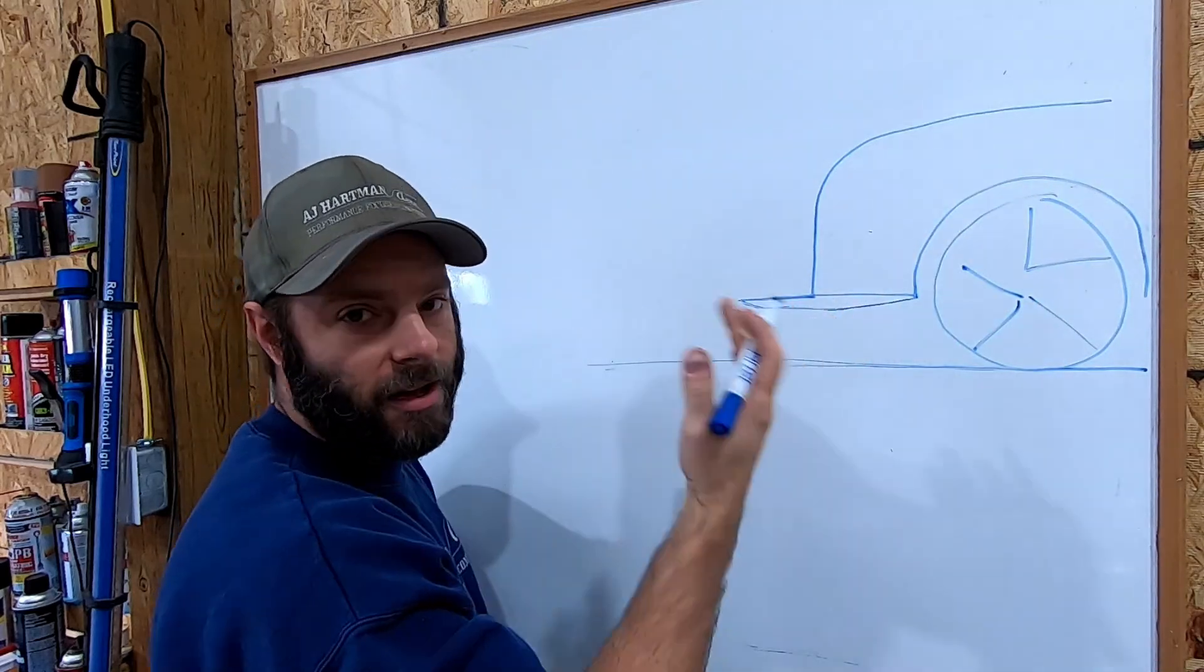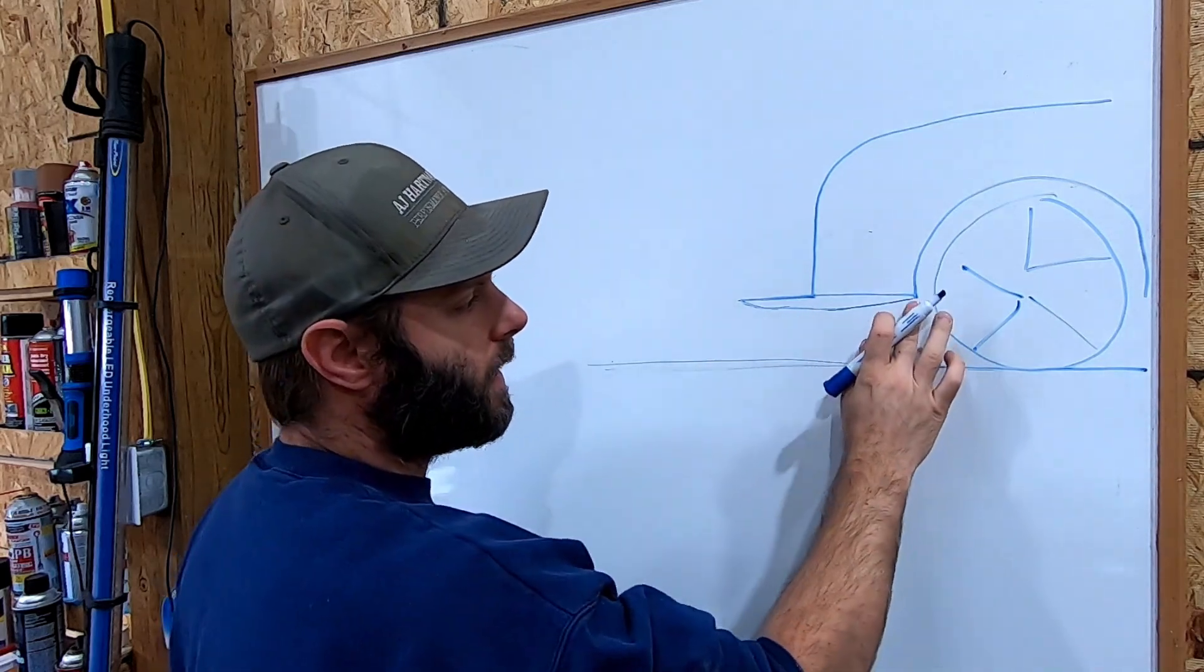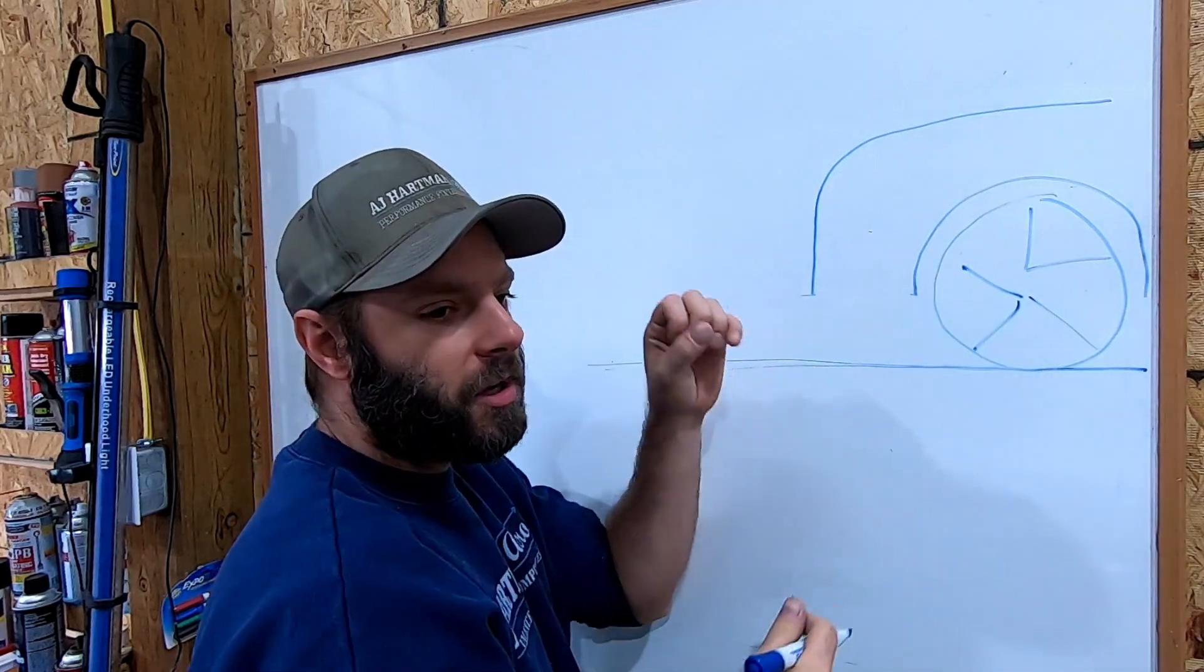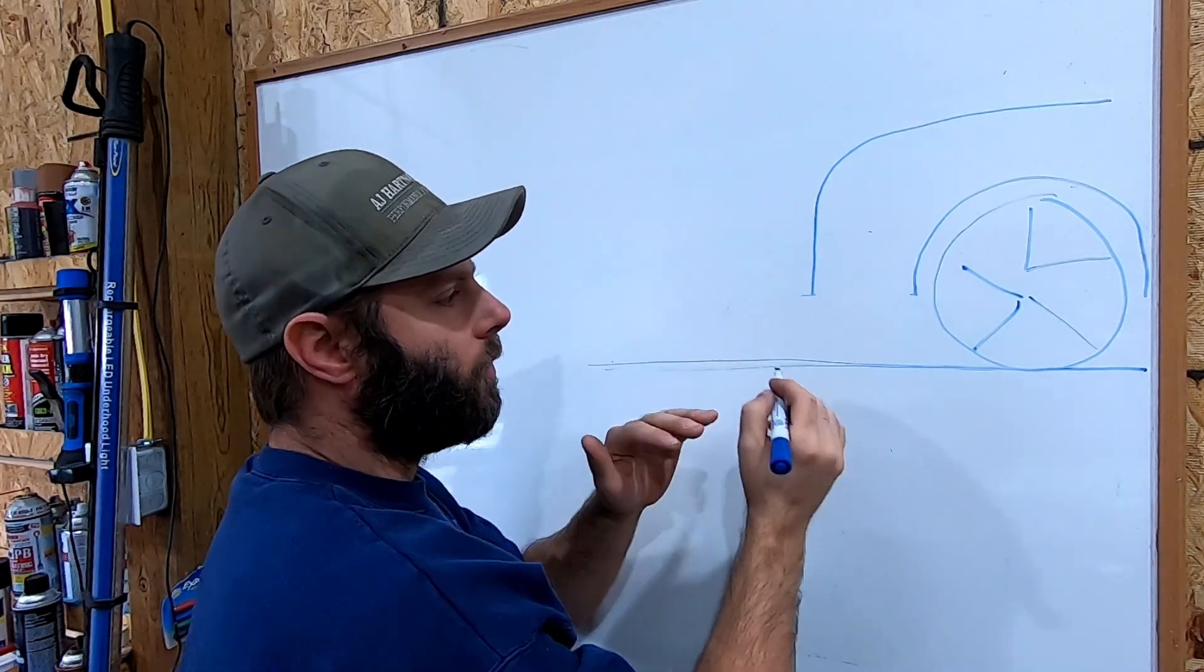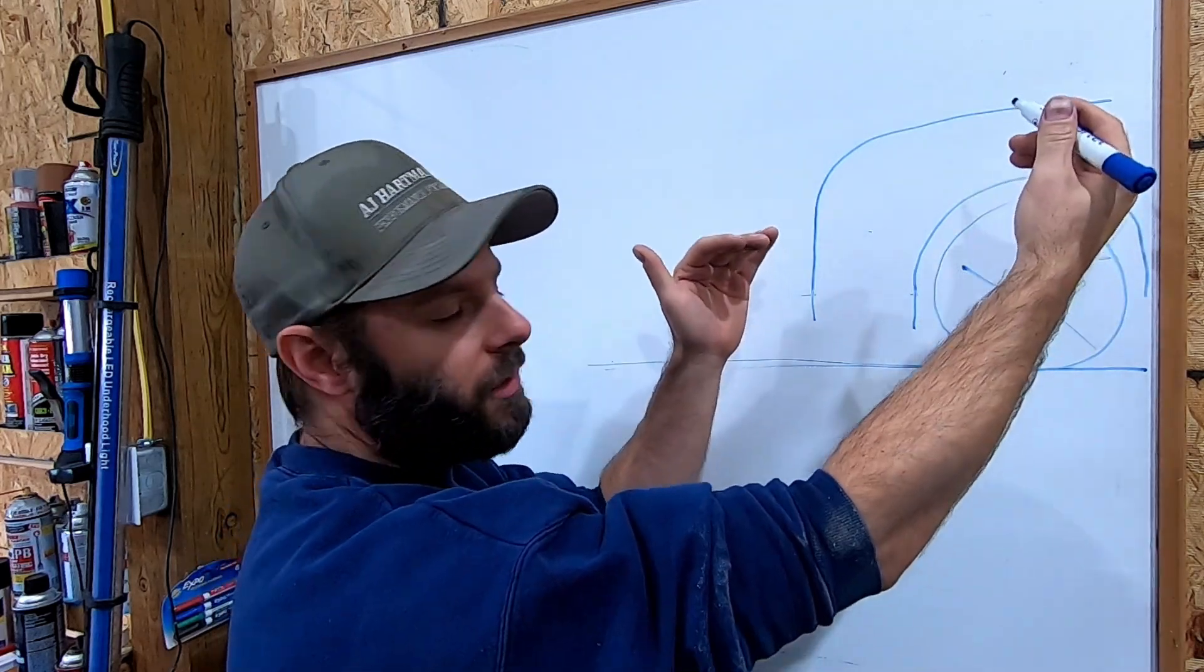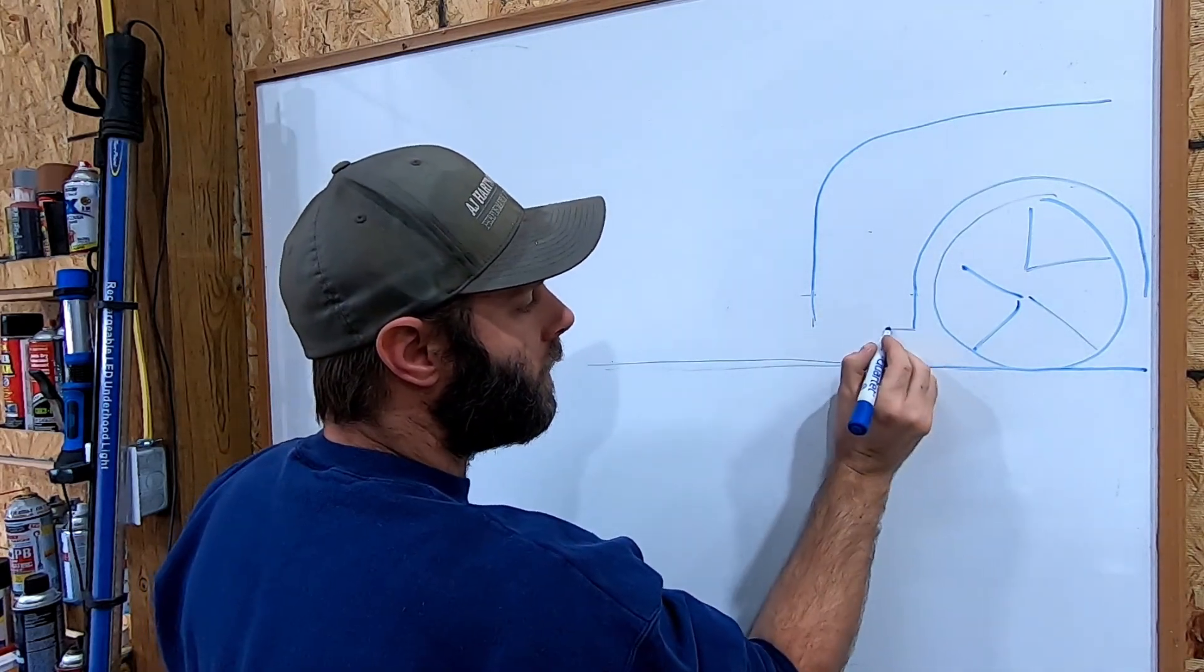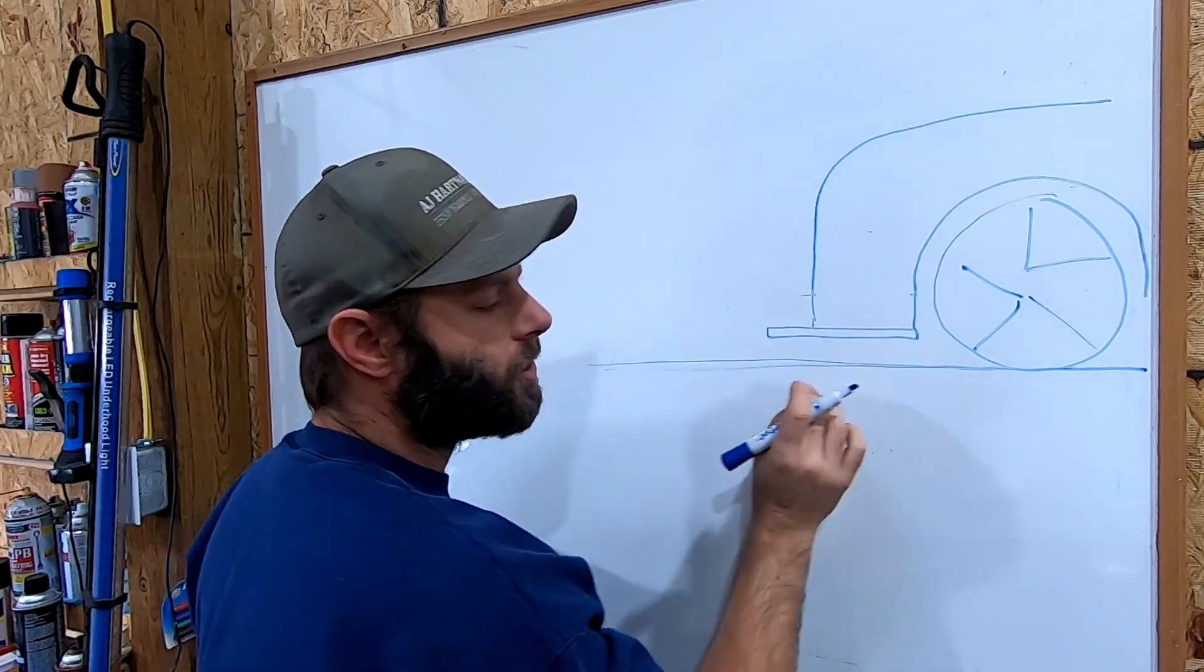But the big difference comes in when under braking when the car squats or just the springs compressing from the aerodynamic load. I'm just going to draw it lower but effectively imagine the whole car coming down or you just mount your splitter at a proper height, comes down to much closer to the track.